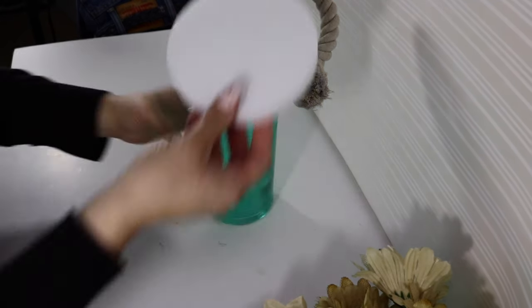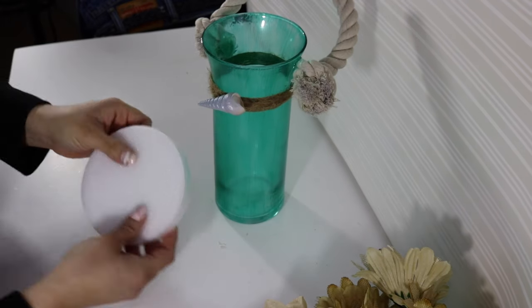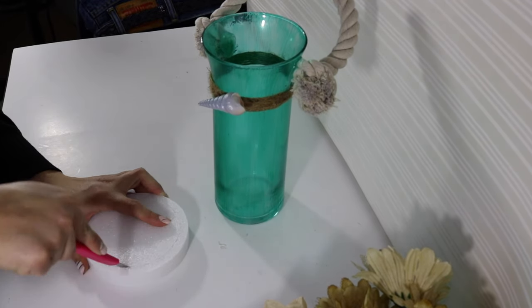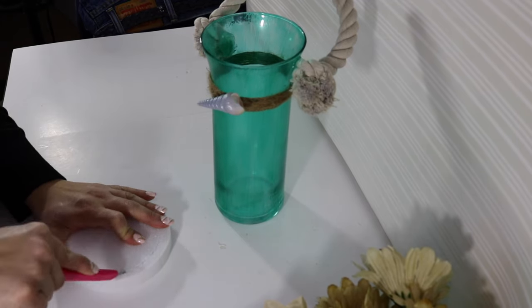So here I have this circular styrofoam, it comes two to a pack, and all I did was place the vase upside down on it and cut it to size so that the center I can pop out and add it right onto the vase.